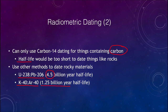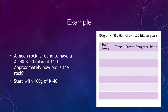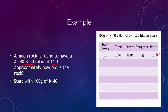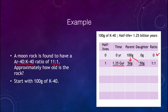Let's look at one example: a moon rock found to have a ratio of 11 to 1 for argon-40 to potassium-40. We want to find out how old the rock is. Starting with 100 grams of potassium-40 — the exact number doesn't matter since it's the ratio we're looking for — at zero half-lives we have 100 grams of the parent and none of the daughter. After one half-life — 1.25 billion years — we have a 1-to-1 ratio of 50 grams each.